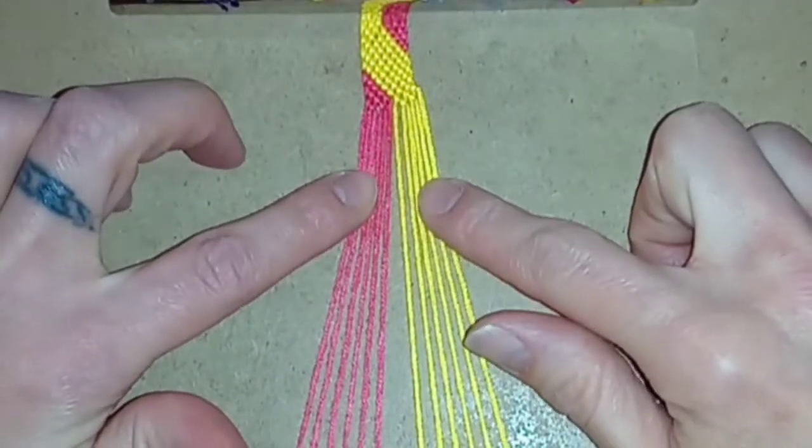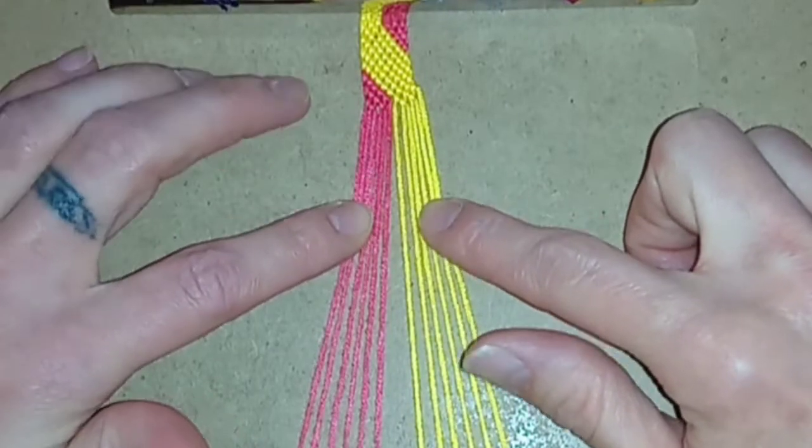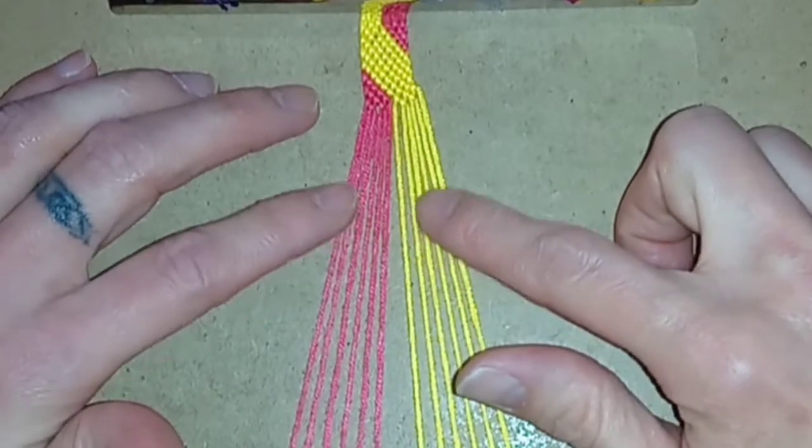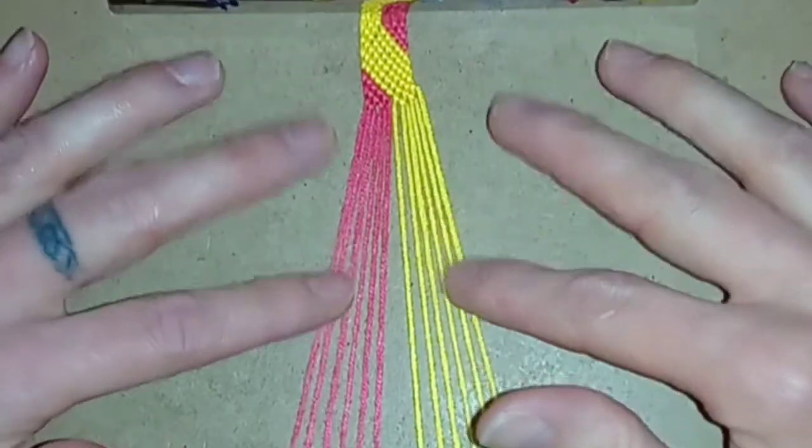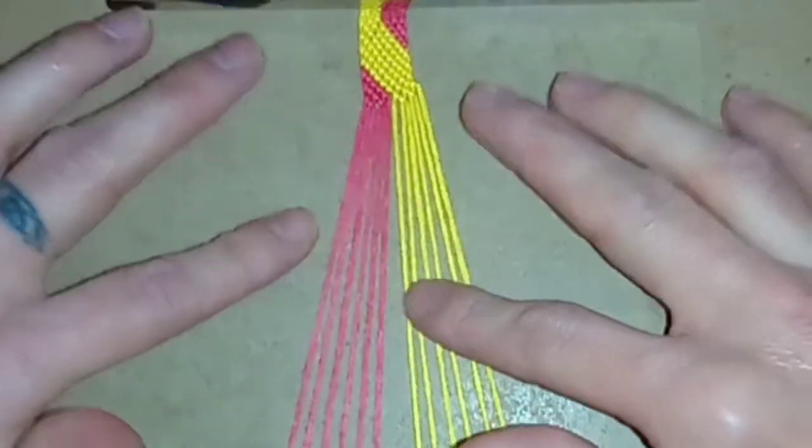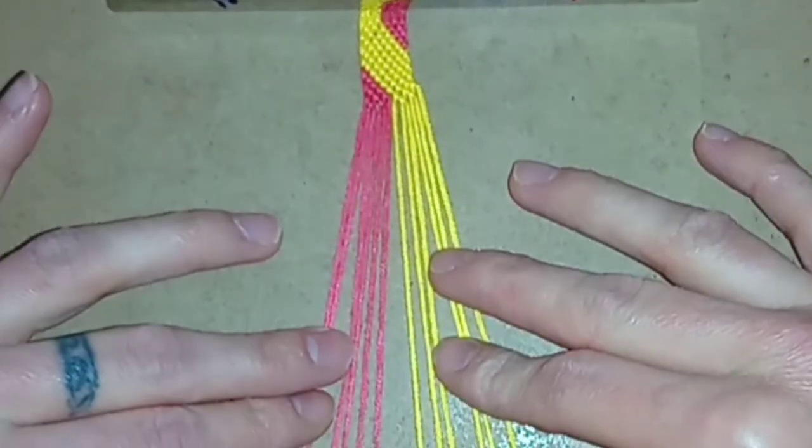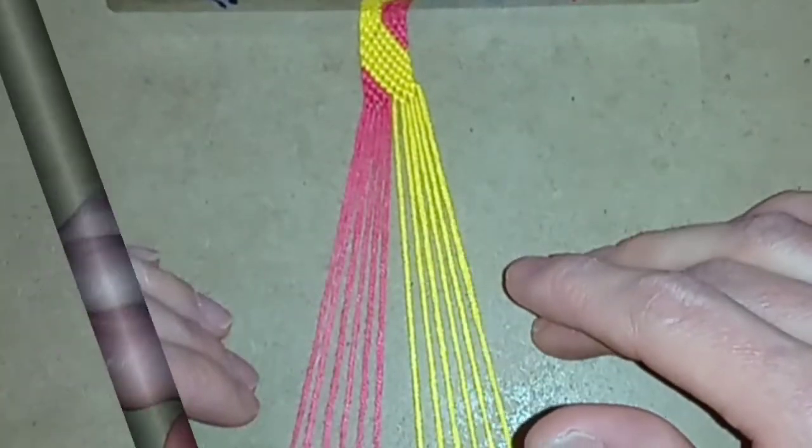You can repeat these two rows for section two for as many rows as you want. For mine I'll switch back to working the whole row straight across on row 12 and then the colours work like section one until the colours are switched back into the original position. Keep repeating these sections until you've got the bracelet as long as you want it.